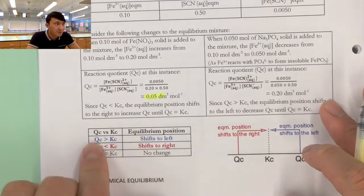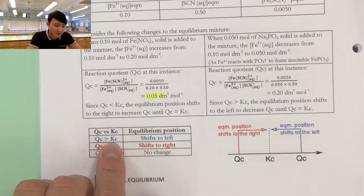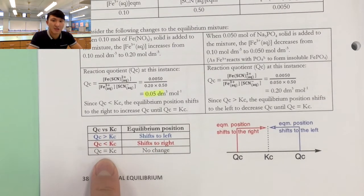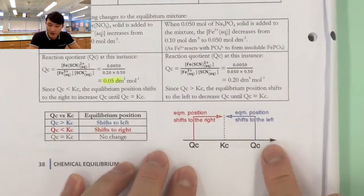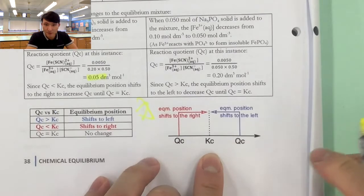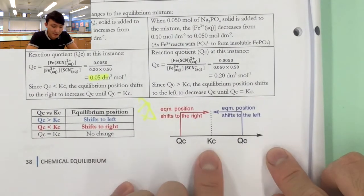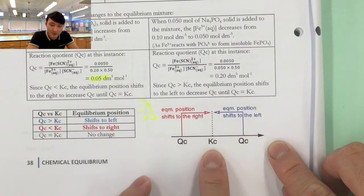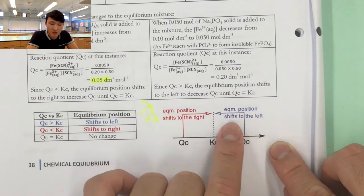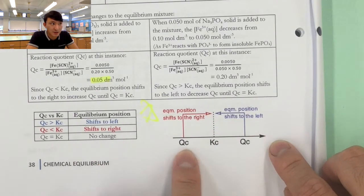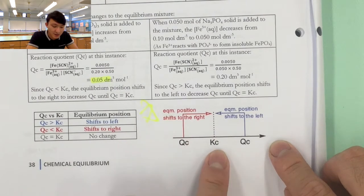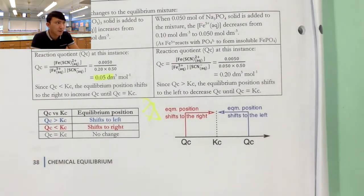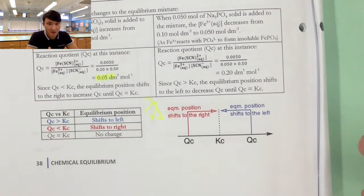As a quick summary: when Qc is larger than Kc, the equilibrium shifts to the left; when Qc is smaller than Kc, it shifts to the right; and if Qc equals Kc, there is no change. A number line is very useful here — Kc sits in the middle. If Qc is on the right of the number line (larger than Kc), it will shift left to reach Kc. If Qc is on the left (smaller than Kc), it will shift right to achieve Kc.